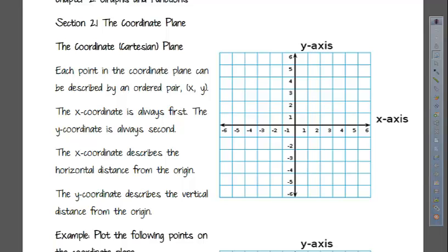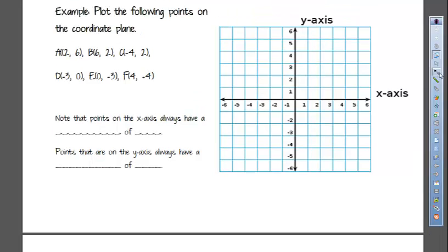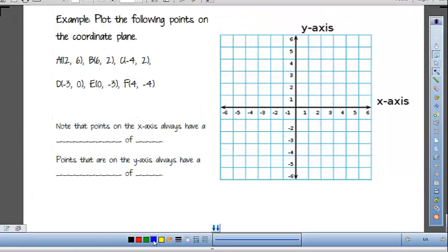So I think the first thing we're going to do is plot a few points. And we want to plot the point A with coordinates 2, 6. So that means from the origin I'm going to go two units to the right, and then up six units. We'll call that point A.